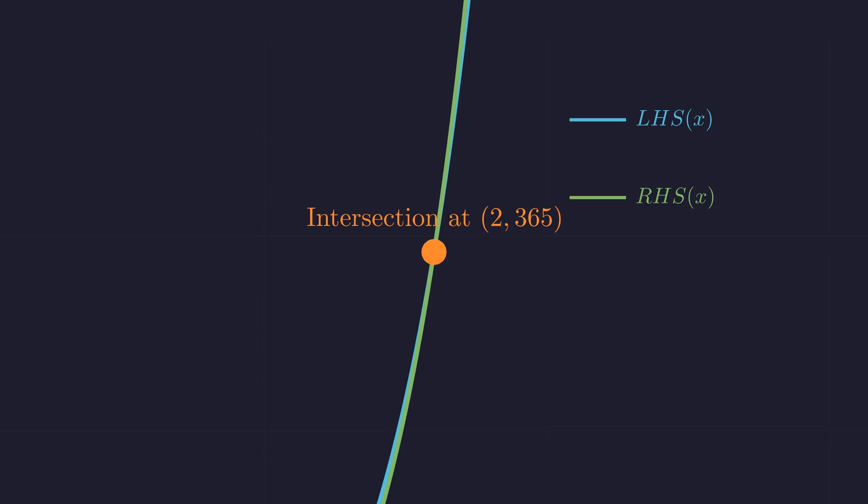Look at how these curves behave. The green curve grows much more steeply because it involves larger bases. This visual evidence suggests they won't meet again, but a picture isn't a proof. To be certain, we need to analyze this more carefully.